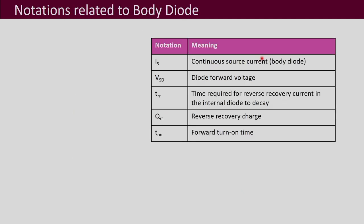Notations related to the body diode in the data sheet include the current rating of the body diode and the diode forward voltage drop. When the MOSFET has its antiparallel body diode conducting, it has a forward voltage drop written as V_SD, because the current flows from source to drain when the diode conducts. Then T_RR — the reverse recovery time — and the reverse recovery charge Q_RR. Sometimes the datasheet will also provide the reverse recovery current I_RR and the turn-on time.